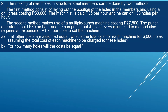The second example: making rivet holes in structural steel members can be done by two methods. The first method uses a drill press costing 30,000 pesos; the machinist is paid 35 pesos per hour and can drill 30 holes per hour. The second method uses a multiple punch machine costing 27,500 pesos; the operator is paid 30 pesos per hour and can punch 4 holes every minute. This method also requires an expense of 1.75 pesos per hole to set the machine. For letter A, what is the total cost for each machine for 6,000 holes, assuming the total machine cost is charged to this job?